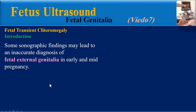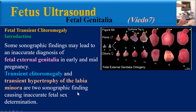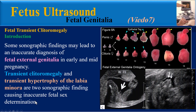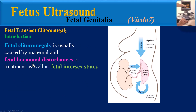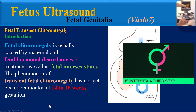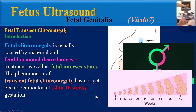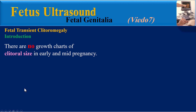Some sonographic findings may lead to an inaccurate diagnosis of fetal external genitalia in early and mid pregnancy. Transient clitoromegaly and transient hypertrophy of the labia minora are two sonographic findings causing inaccurate fetal sex determination. Fetal clitoromegaly is usually caused by maternal and fetal hormonal disturbances or treatment, as well as fetal intersex states. The phenomenon of transient fetal clitoromegaly has not yet been documented at 14 to 16 weeks gestation.